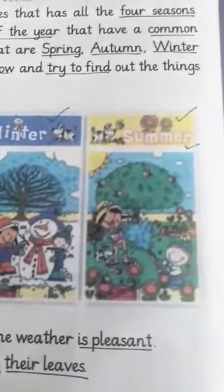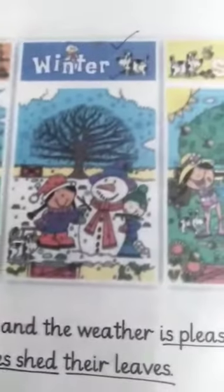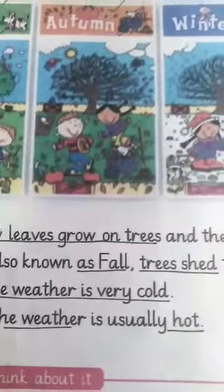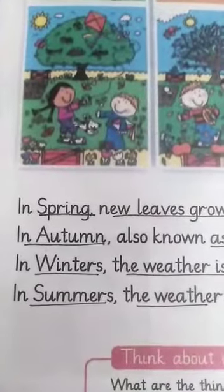Look at the pictures below and try to find out the things the kids are doing in spring, autumn, winter, and summer. In spring, new leaves grow on trees and the weather is pleasant. You can see in the picture.